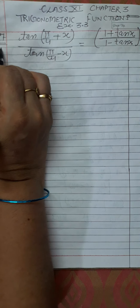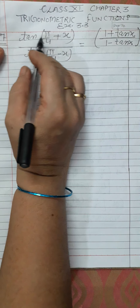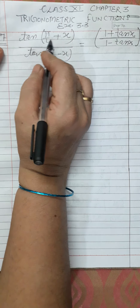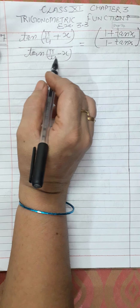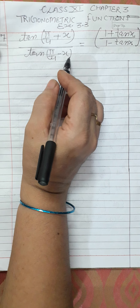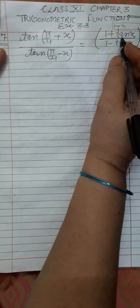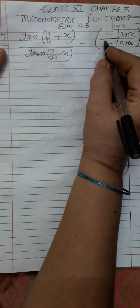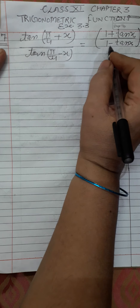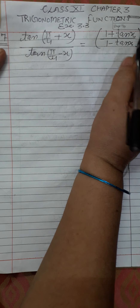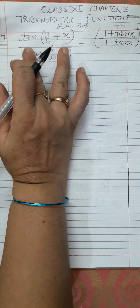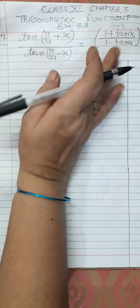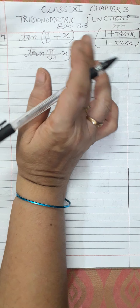Question number 7: Prove the following — tan(π/4 + x) upon tan(π/4 − x) is equal to [(1 + tanx) upon (1 − tanx)] whole square. We have to prove the left-hand side equal to the right-hand side.